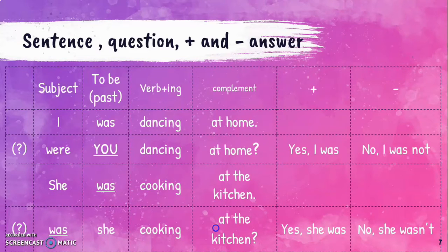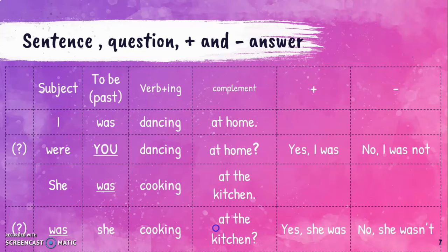Here we have an example: 'I was dancing at home.' 'I' is the subject. 'Was' is the verb to be in past tense. 'Dancing' is the verb plus -ing. 'At home' is the complement. Let's change this into a question: 'Were you dancing at home?' Positive answer: yes, I was. Negative answer: no, I wasn't — or no, I was not. Contraction or without contraction — both are correct.